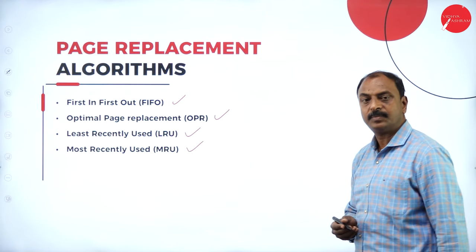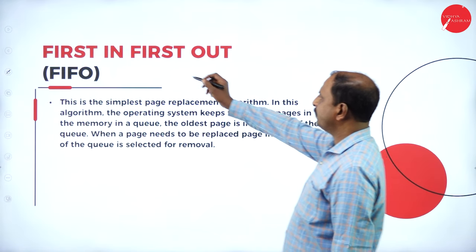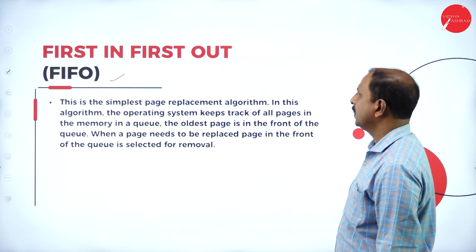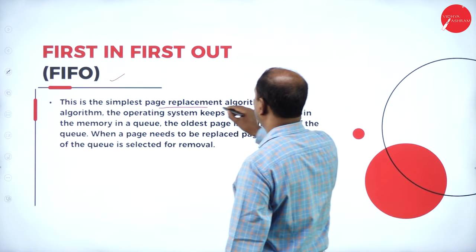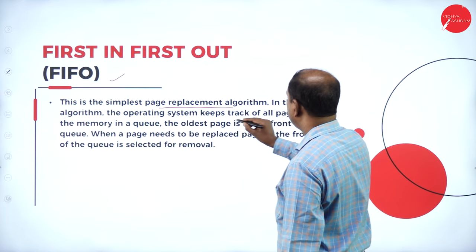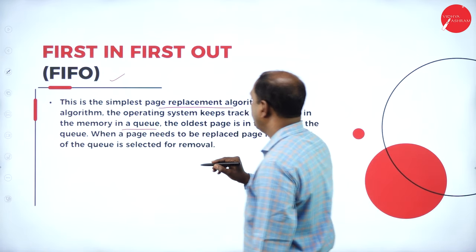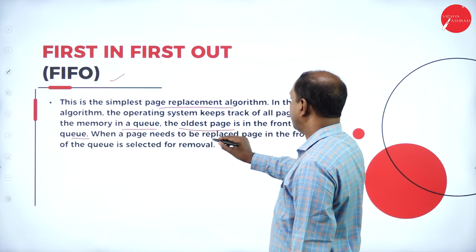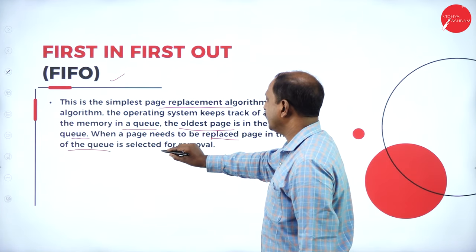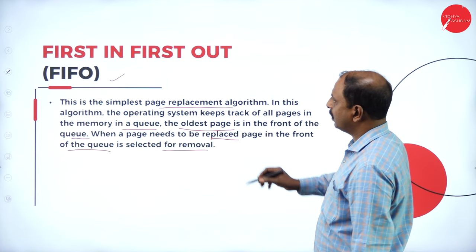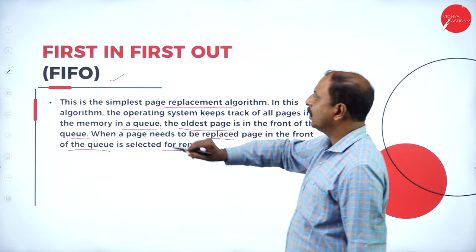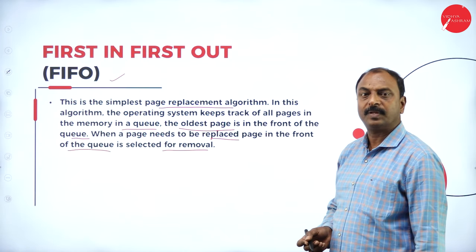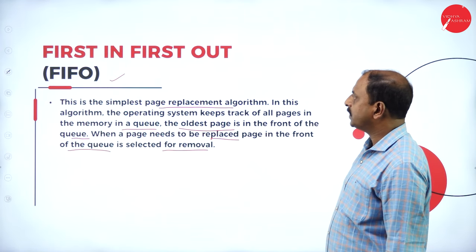FIFO stands for First In First Out — this is the simplest page replacement algorithm. The operating system keeps track of pages in memory in a queue, with the oldest page at the front. When a page needs to be replaced, the page at the front of the queue is selected for removal — the first page entered into the queue is replaced with the new page from secondary memory.